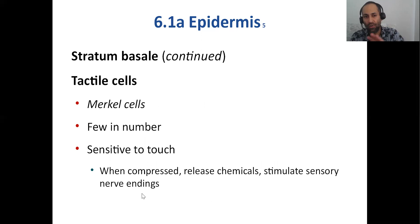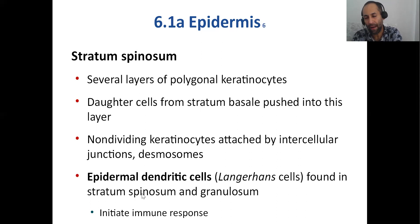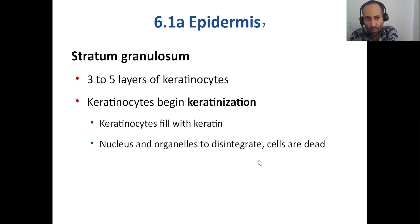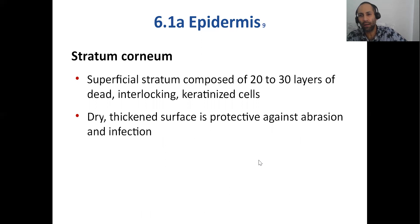For tattoos, you have to go deeper than the stratum spinosum. If the dye is there, the Langerhans cells will eat it up and your tattoo disappears pretty soon. Stratum granulosum is where keratin cells start to die off. Stratum lucidum is only found on the palms of the hands and soles of the feet — the thick skin. Stratum corneum, the cornified layer, is thick and resilient because it's made up of dead keratinized cells — dry, thickened surface, protective against abrasions and infections.